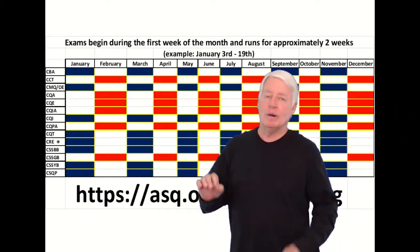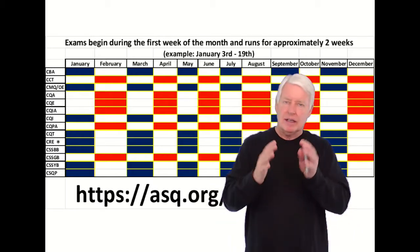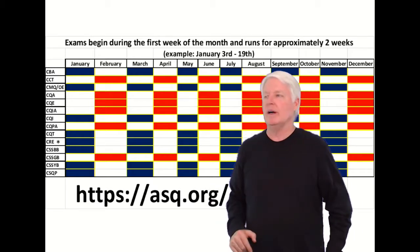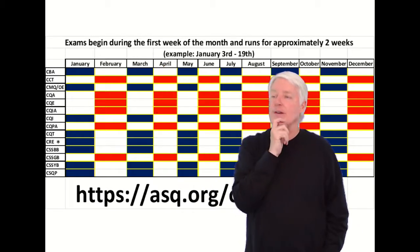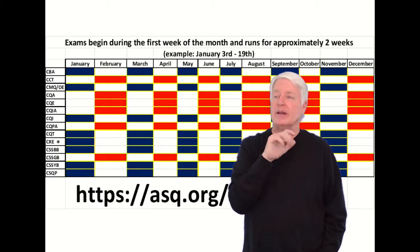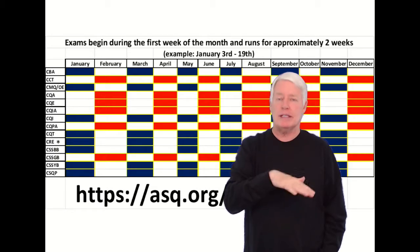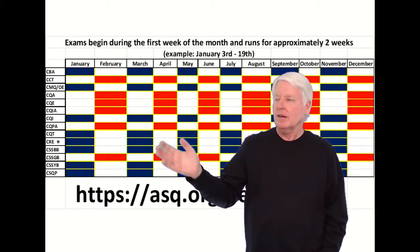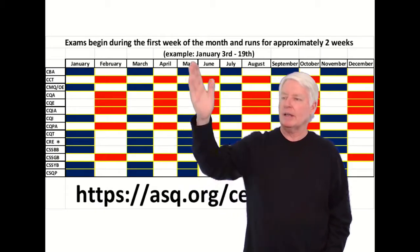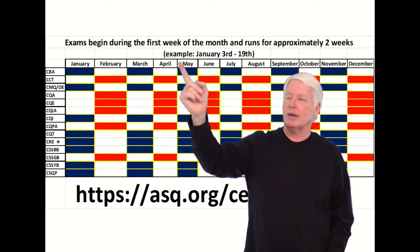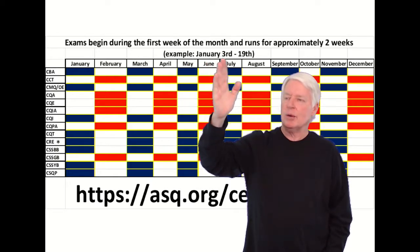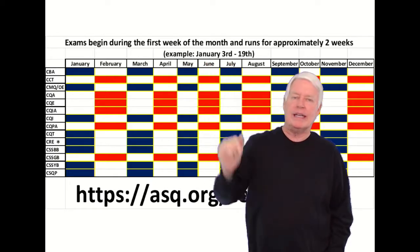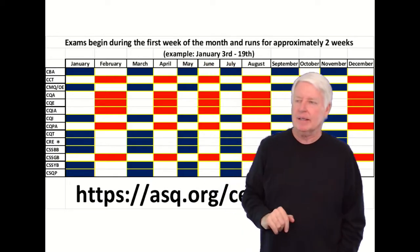Now they don't let you test every day of the month — they have a testing window. The exams begin during the first week of the month and run for approximately two weeks. For example, if you're going to take it in January, the ASQ website may say January 3rd through the 19th.